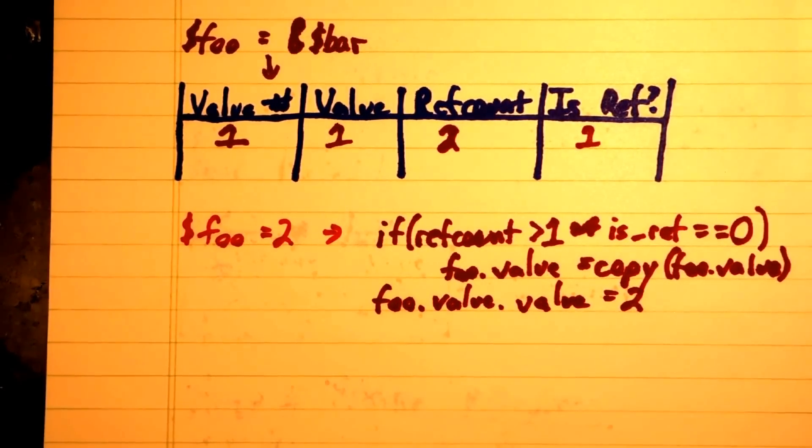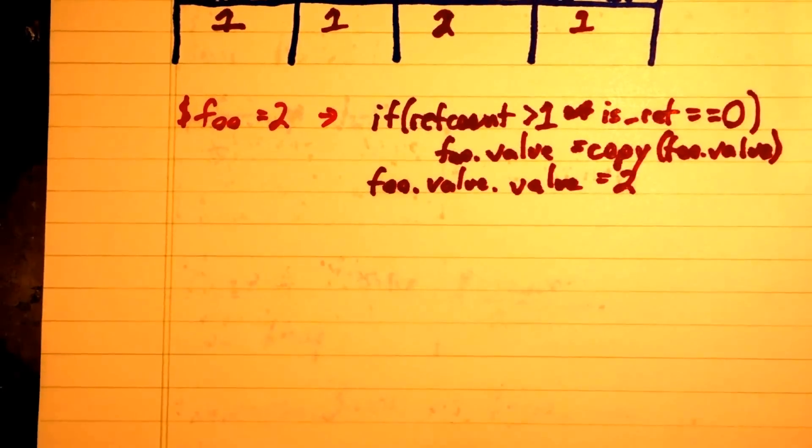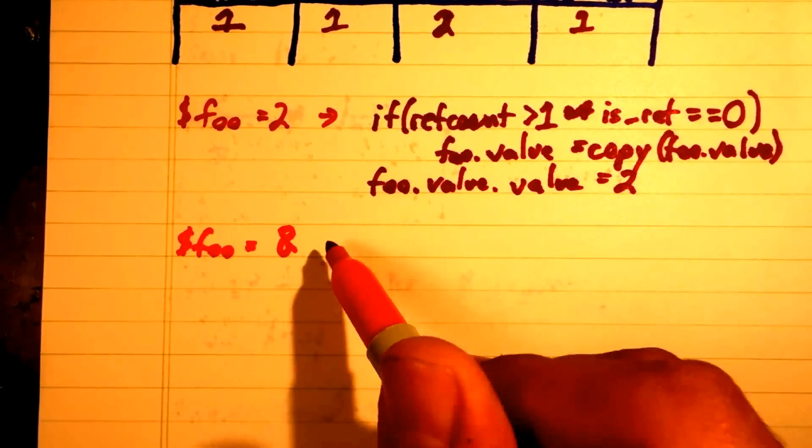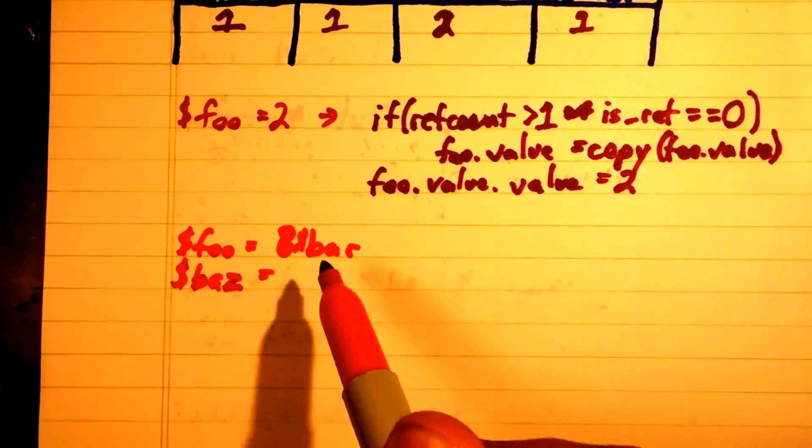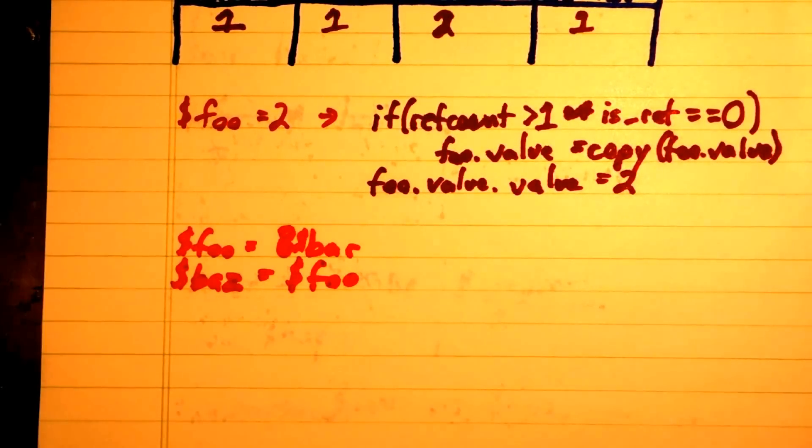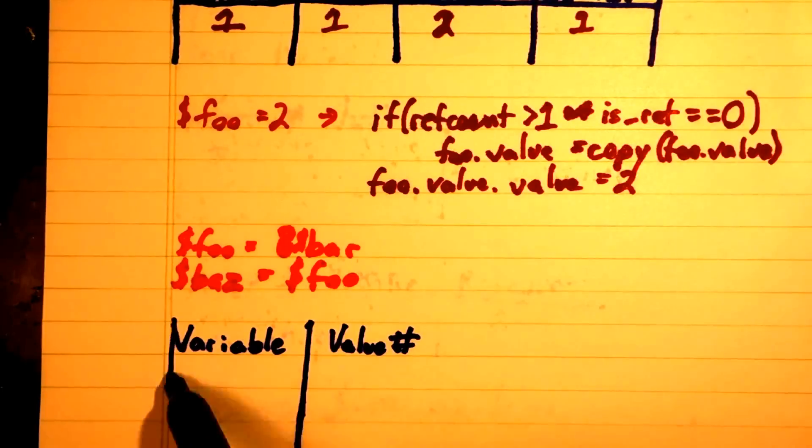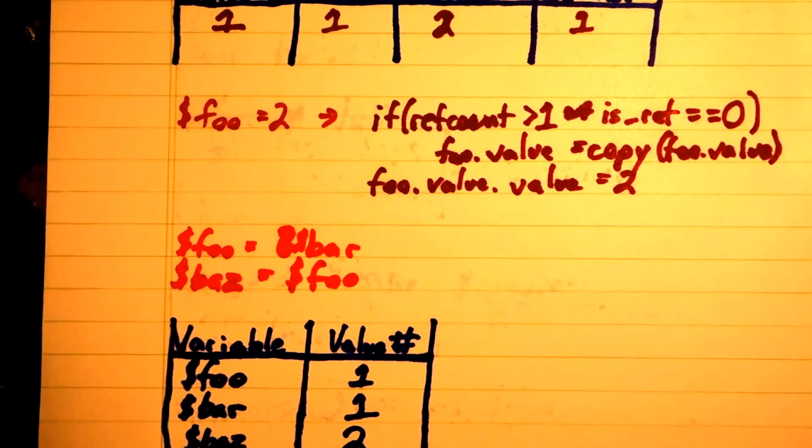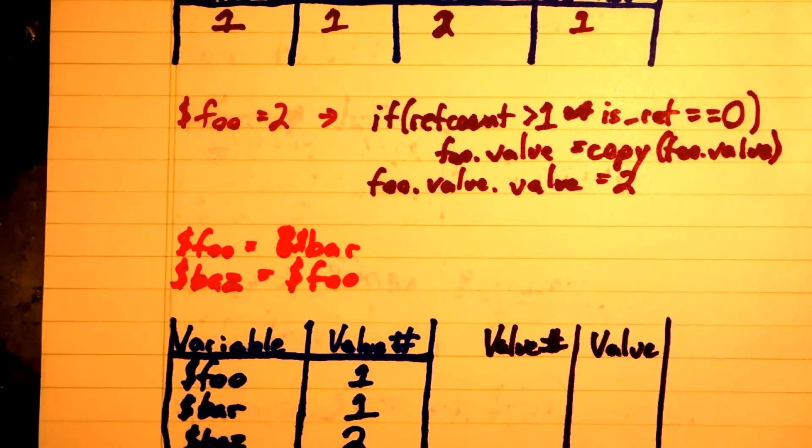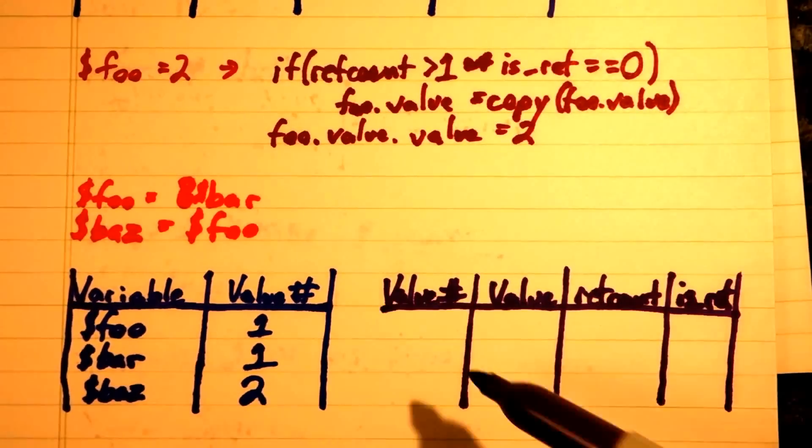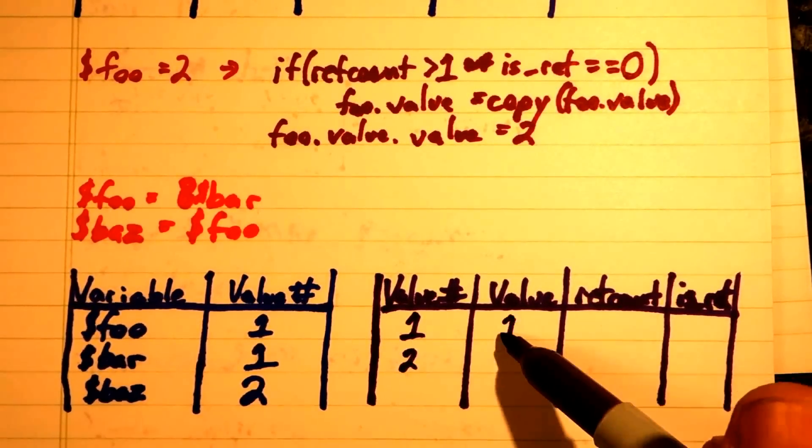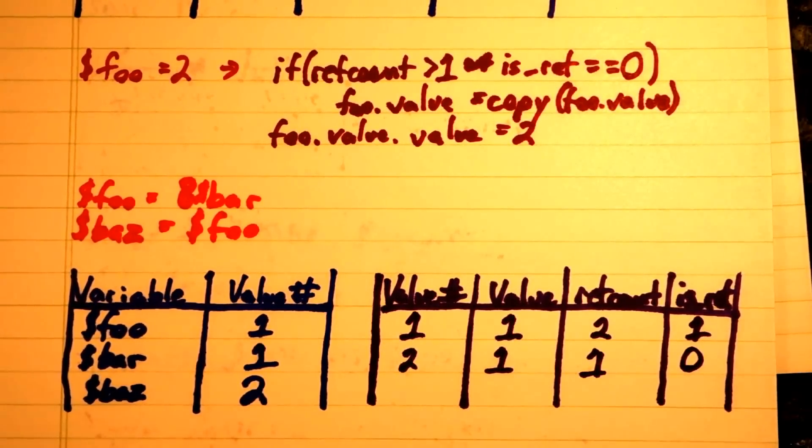But now, what happens if we try to do a normal copy of a referenced value? We can't just increase the ref count, because if we did that, we would be using a reference. So we need to do a full copy of the value. Therefore, any time that we use references, we lose all of the benefits that copy on write gives us.